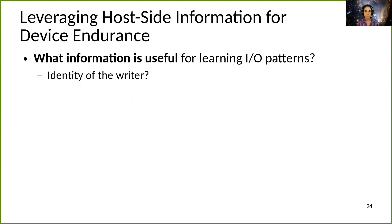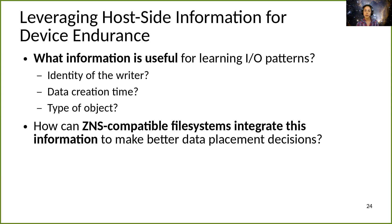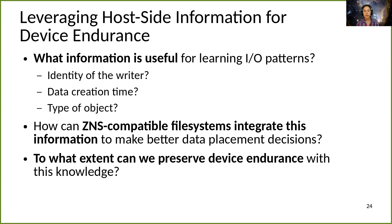This area is rich for exploration. For example, what information can we use to learn I/O patterns that can help make endurance-preserving placement decisions, like the object lifetimes I just discussed? Can we use the identity of the writer, such as its VM, container, or application? And what about the object's creation time, or the types of objects being written? How can ZNS-compatible file systems integrate this information to make better placement decisions? And to what extent can we preserve device endurance with this knowledge?